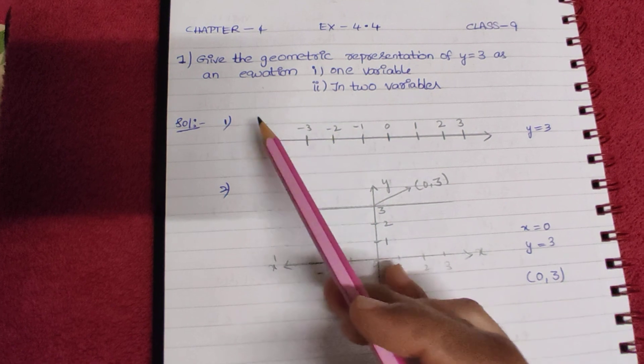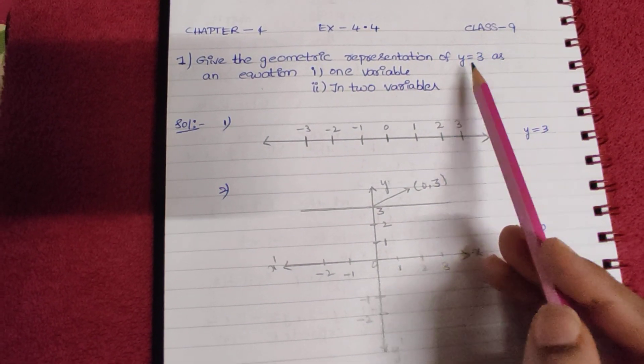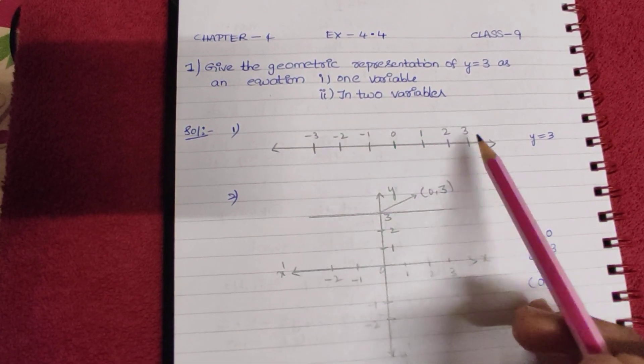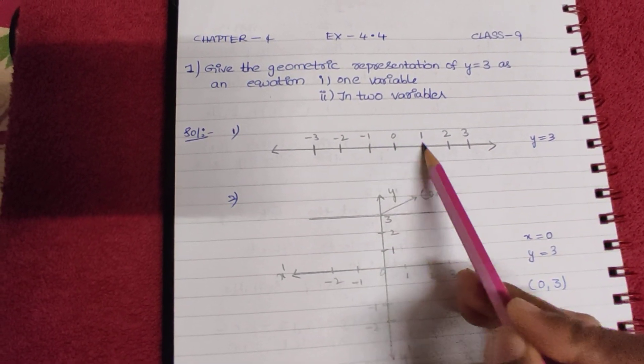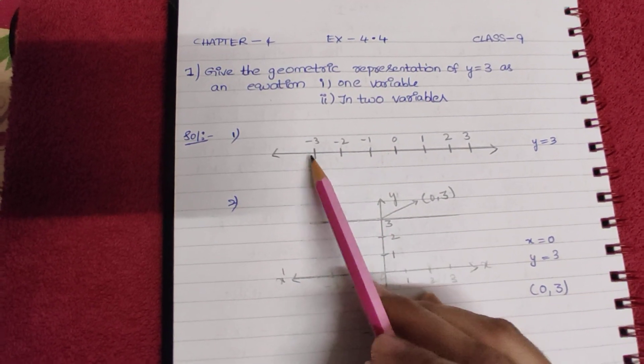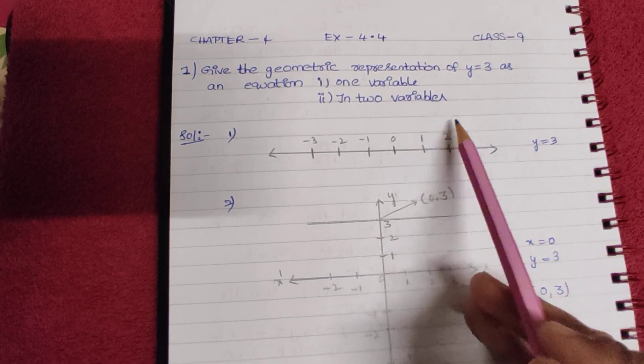Solution first one. So here they are asking y value is 3, so they are asking first one in one variable. So, that is why I have drawn one line: 0, 1, 2, 3, minus 1, minus 2. This one is not required, why? Because here they are asking positive value, so this is important.